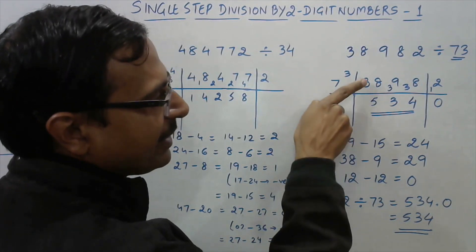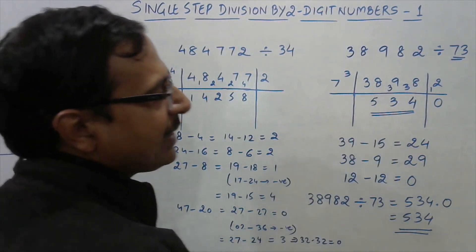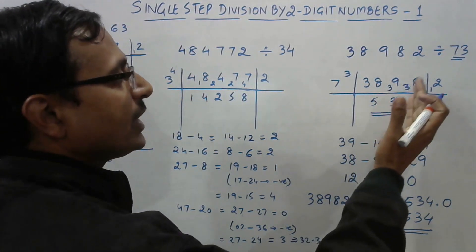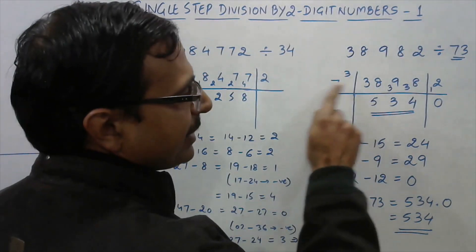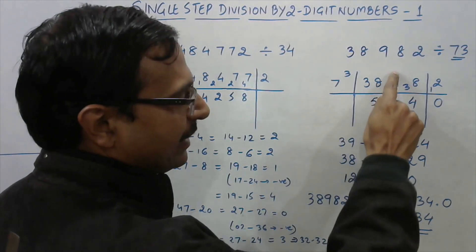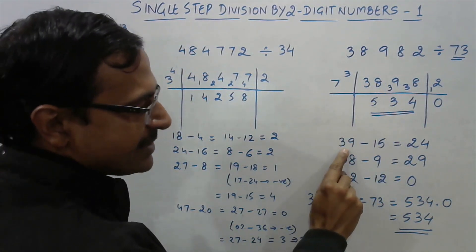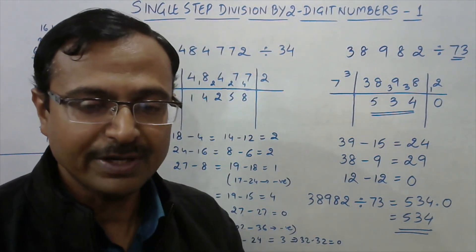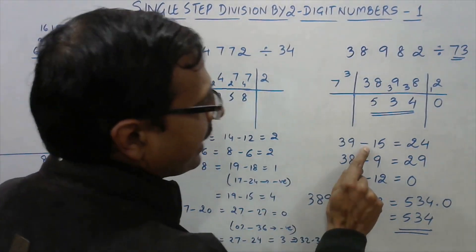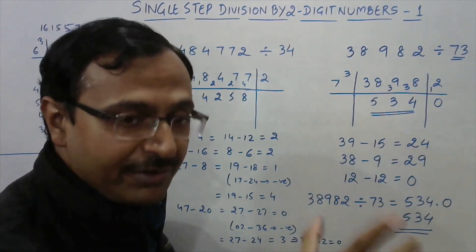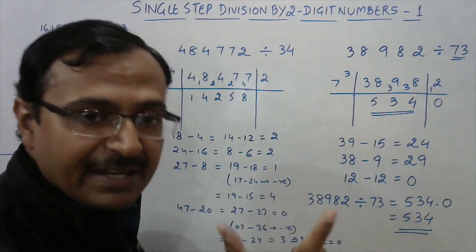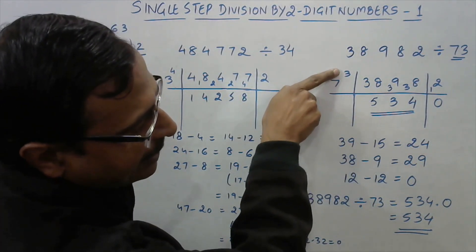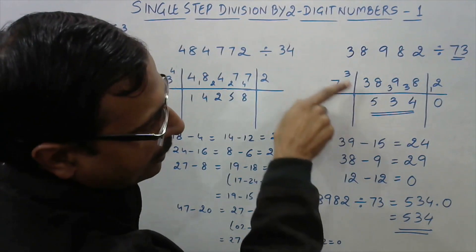7 times 5 is 35, and 38 minus 35 gives you 3, which I have written here. You need to consider the next digit now, so 3 carried down makes it 39. Now, here comes a very important step to be followed in this type of division. We need to subtract something from 39 to convert it into the actual next dividend. 39 is not the ready dividend. What is to be subtracted? The separated-out digit 3 multiplied by the first quotient digit: 3 × 5 = 15.